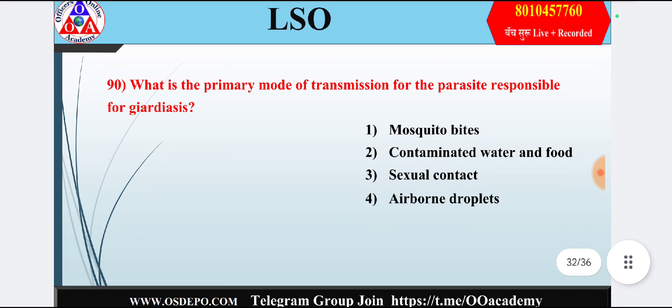Last question: What is the primary mode of transmission for the parasite responsible for Chagas disease? Option 1: mosquito bites; option 2: contaminated water and food; option 3: sexual contact; option 4: airborne droplets. Answer is option 2 — contaminated water and food.